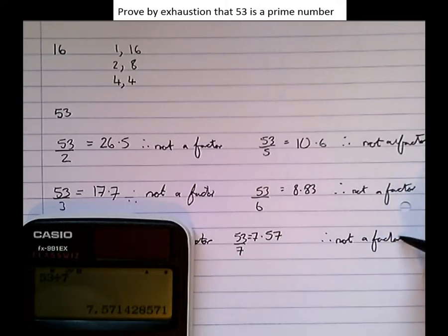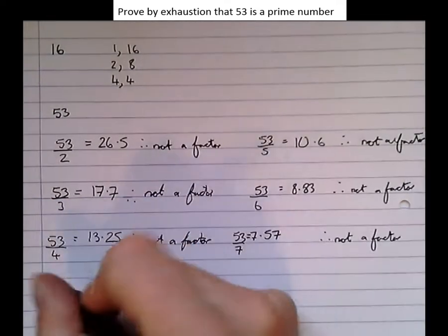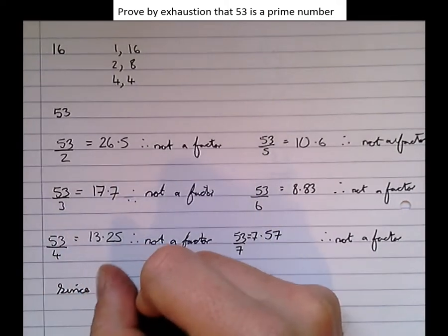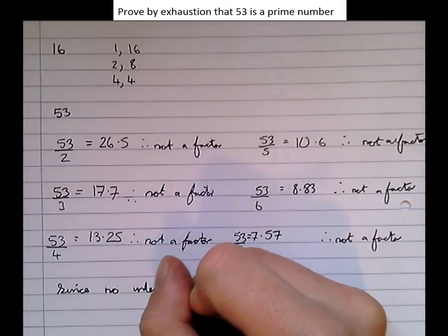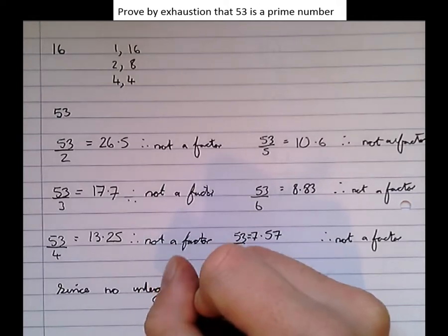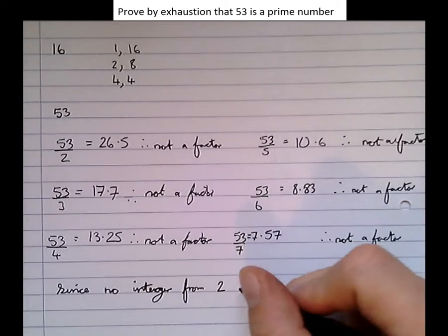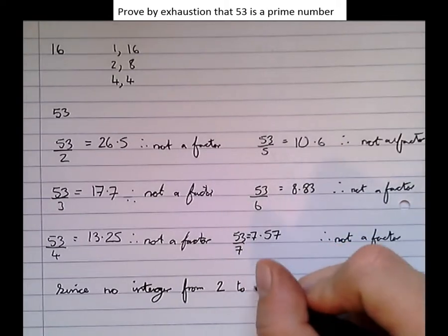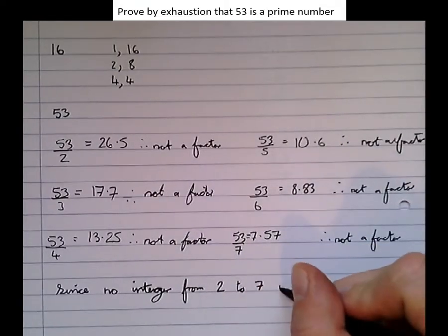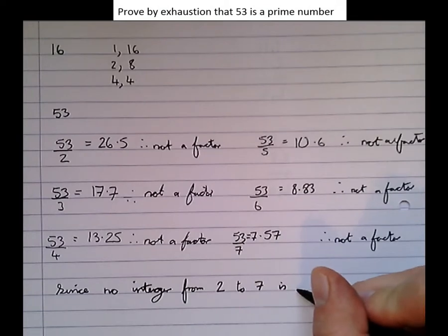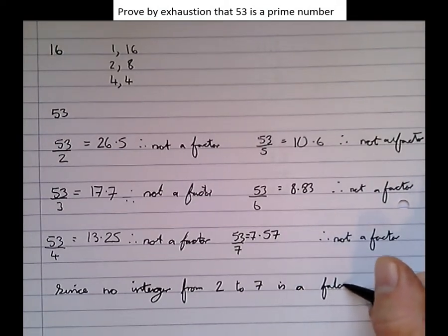The conclusion is an important part: since no integer from 2 to 7 is a factor of 53, then 53 must be prime.